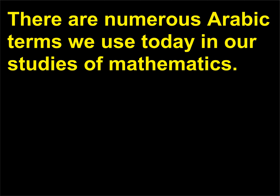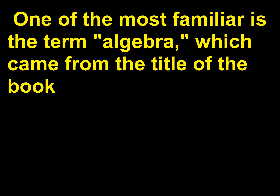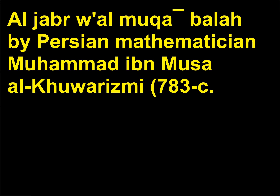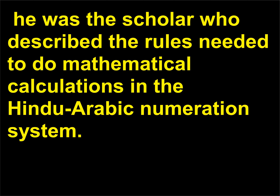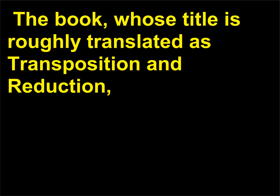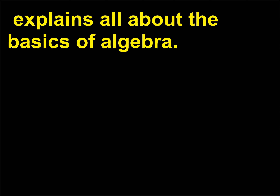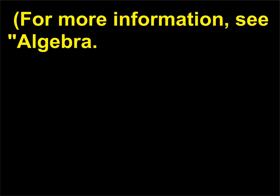There are numerous Arabic terms we use today in our studies of mathematics. One of the most familiar is the term algebra, which came from the title of the book Al-Jabr W. Al-Muqabala by Persian mathematician Muhammad Ibn Musa Al-Khwarizmi, 783–c.850. He was the scholar who described the rules needed to do mathematical calculations in the Hindu-Arabic numeration system. The book, whose title is roughly translated as Transposition and Reduction, explains all about the basics of algebra.